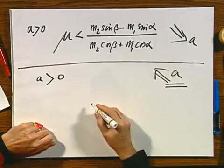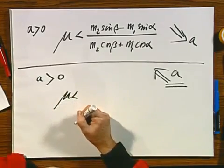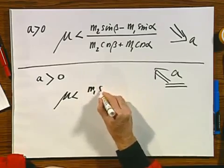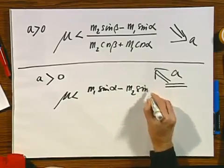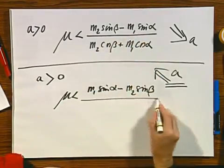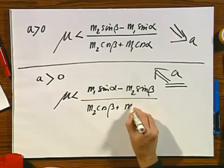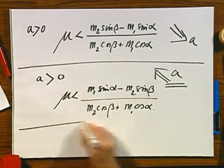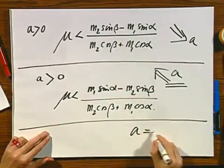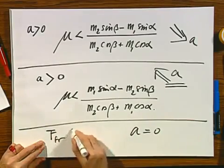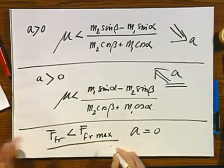Now when I do that, I find a different criterion for mu. I've expressed it in terms of mu, and now I find m1 sine alpha minus m2 sine beta. It shouldn't surprise you that the upstairs changes sign, and the downstairs is exactly the same, m2 cosine beta plus m1 cosine alpha. In all other cases that this is not the case and that this is not the case, a equals zero, and the frictional force will be in general smaller than the maximum frictional force and could even be zero.